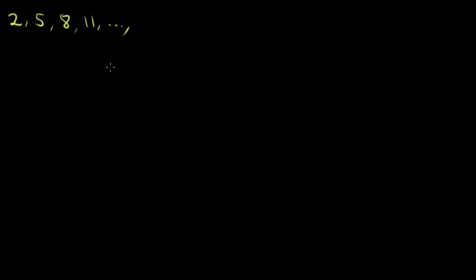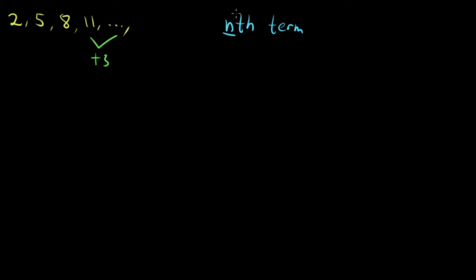Now, how do we find a formula for the nth term using this sequence? The nth term basically means any term you can think of — n can be any number: the 5th term, 6th, 7th, 10th, 100th. One way to do it is to just keep on adding the common difference, since you already know it's 3.